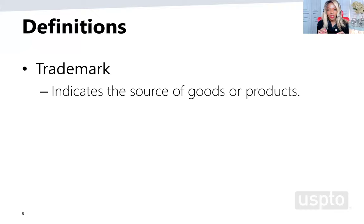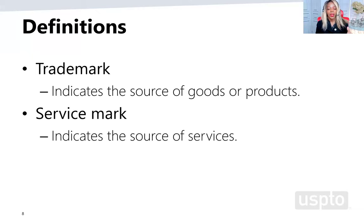Let's think about some of the terms we use to describe trademarks. Traditionally, 'trademark' referred only to marks identifying goods, while 'service mark' identified marks used for services. But these days, folks use the term trademark to refer to both types — marks that identify goods and marks that identify services. Folks pretty much understand what you mean when you say them.